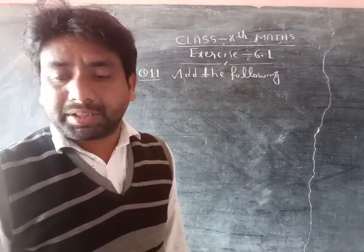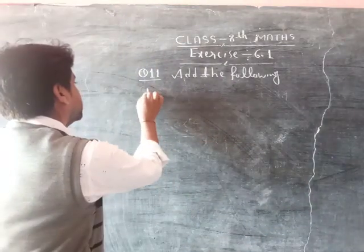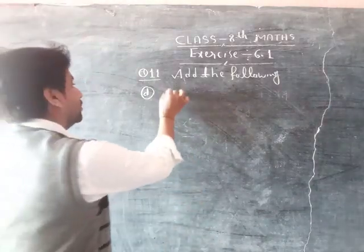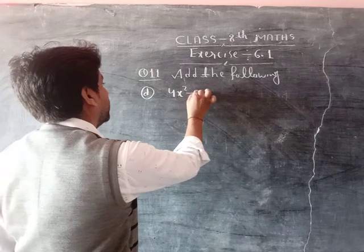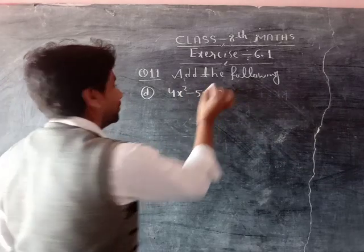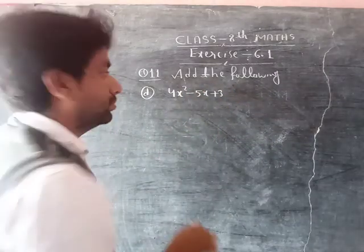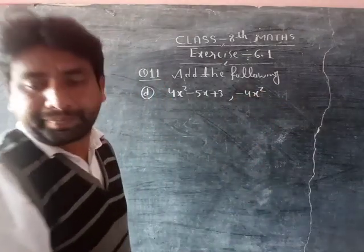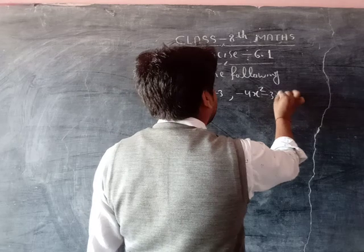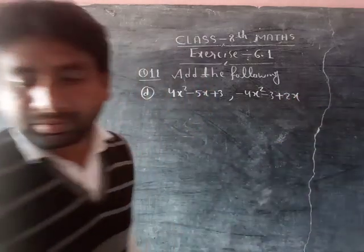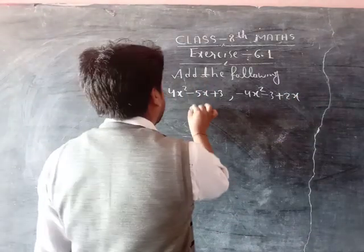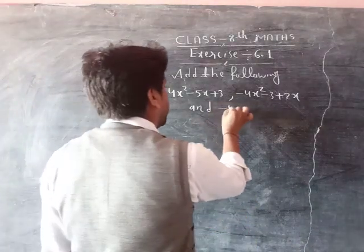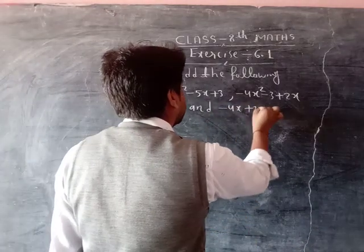Question D: 4x square minus 5x plus 3, minus 4x square minus 3 plus 2x, and minus 4x plus 3x square.